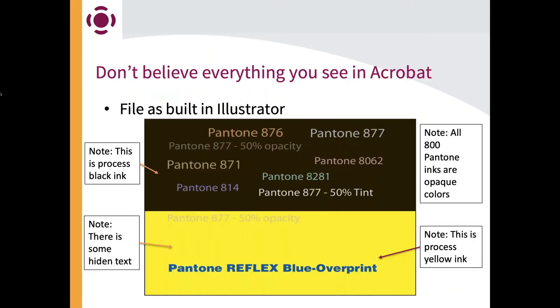Here's a file that was used in the ISO to describe the problem to the team working on PDF 2.0 — the problem when you define something as transparent, opaque, or overprint. This file was built in Illustrator. All of those 800-and-some-thousand numbers are inks that are opaque in nature, meaning they do not let whatever is printed below them show through. The process black ink, however, is a transparent ink — it's designed to let some colors underneath show through. Same with yellow. The reflex blue is what's called a semi-opaque ink, meaning its properties tend to only let a little bit of the ink through.